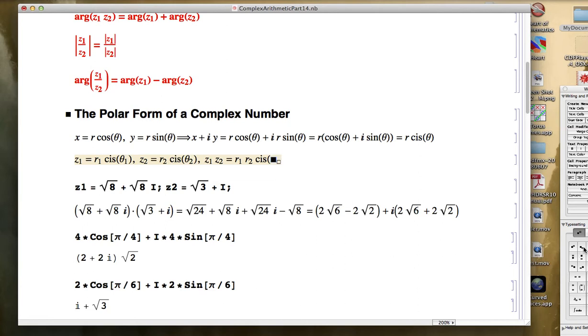We're using θ1 for the argument of z1 and θ2 for the argument of z2. So this formula right here,